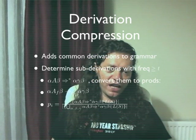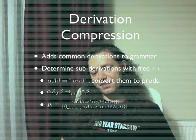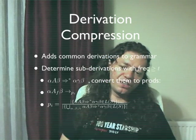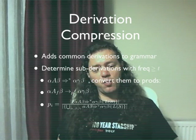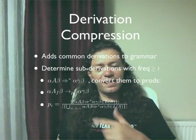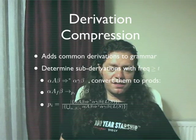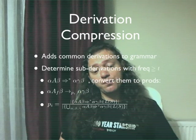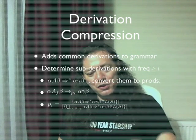Derivation compression is the third algorithm. This algorithm adds common derivations to the grammar and may be the most useful among these algorithms. First, we determine subderivations in the solution corpus with frequency greater than or equal to t. We mine the derivations using the derivation lattice, perform an enumeration algorithm on the derivation lattices, detect these common derivations, and convert them to productions. The probability of the productions is calculated according to how many times that derivation occurs in the solution corpus.